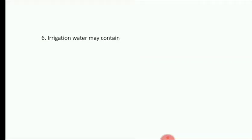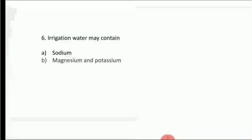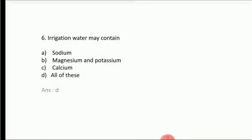Next question: irrigation water may contain — Option A: sodium, Option B: magnesium and potassium, Option C: calcium, Option D: all of these. Answer is Option D, all of these. Magnesium, potassium, calcium — all these elements are found in irrigation water.